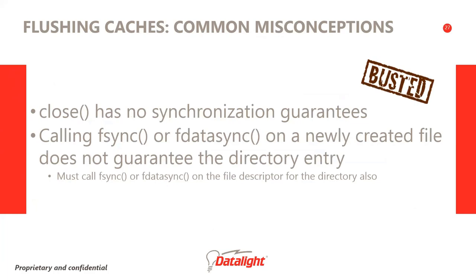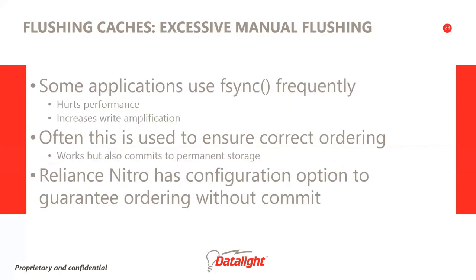Two misconceptions have arisen in common Linux development practices. The close system call does not provide any synchronization guarantees — Linux does not flush dirty data when the file descriptor is closed. In some Linux file systems, calling fsync or fdatasync on a newly created or renamed file does not necessarily ensure that the directory entry has also reached non-volatile storage; an explicit fsync on the file descriptor for the directory is also needed. If a file is opened in O_SYNC mode, every write to that file descriptor is synchronous, as if immediately followed by an fsync. If opened in O_DSYNC, every write is synchronous as if immediately followed by an fdatasync. Reliance Nitro can be configured such that fsync provides ordering guarantees without committing everything to permanent storage.